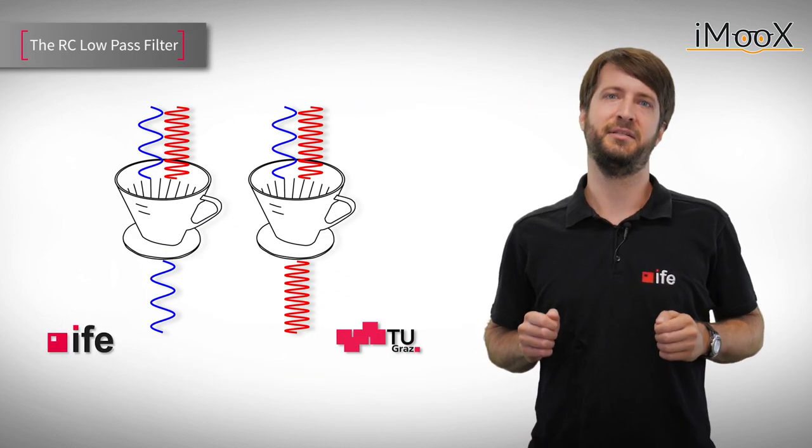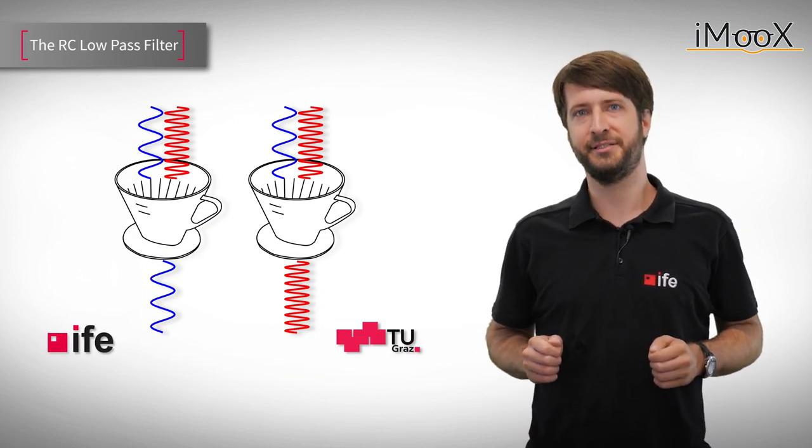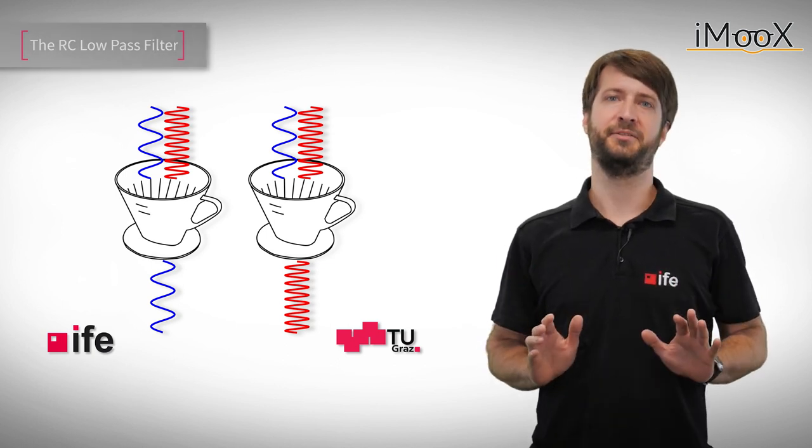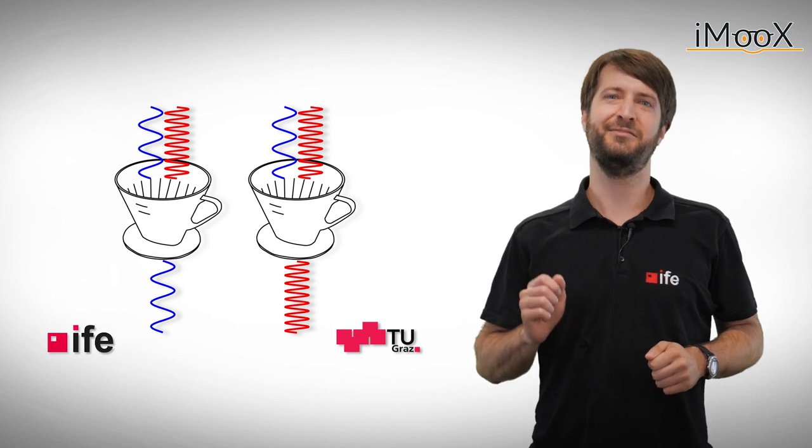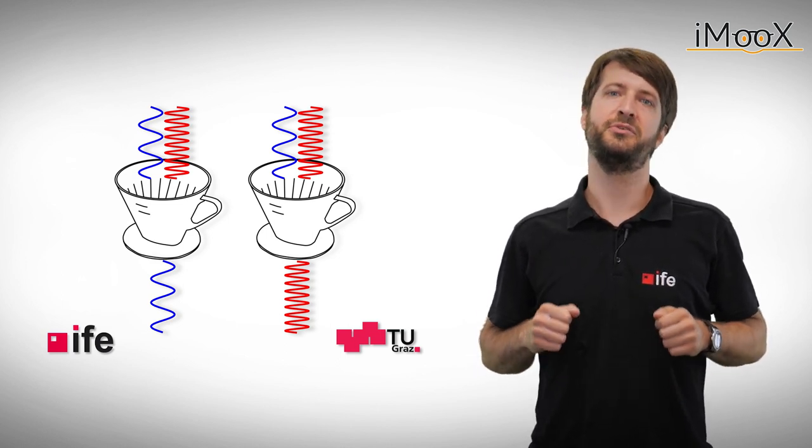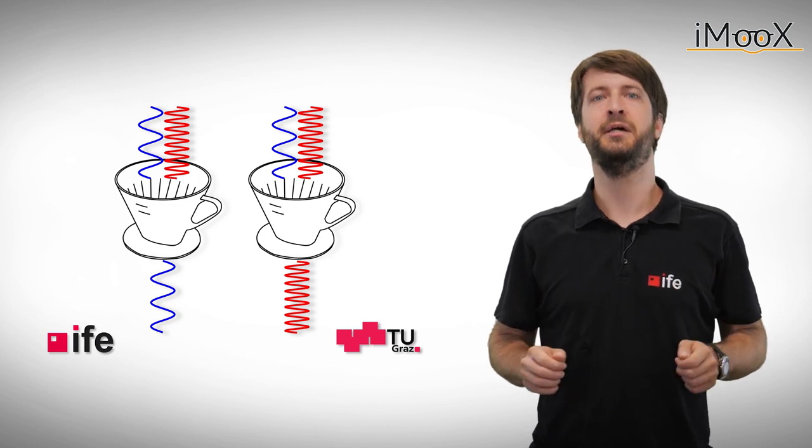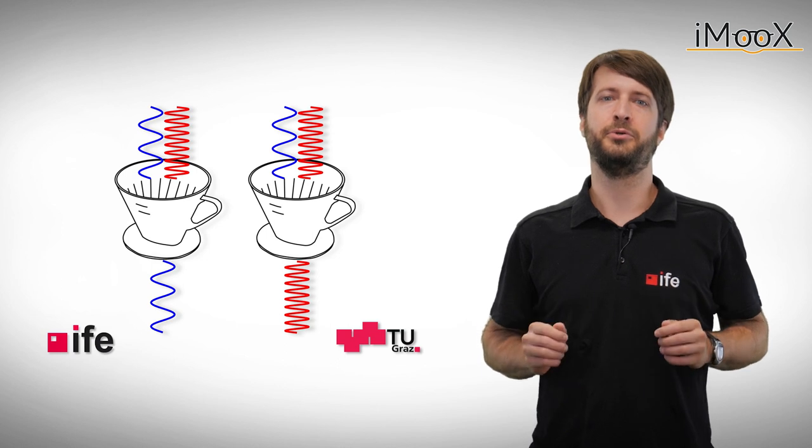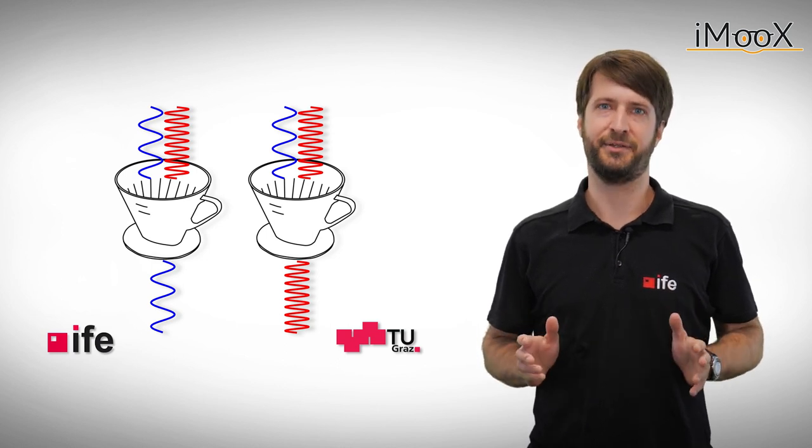Notice that until now all AC signals can either pass through our filter or are simply stopped by it. There are filters though, which can actively amplify an AC signal. We will talk about those so-called active filters in one of our next videos. But today we only want to focus on how to build passive filters.